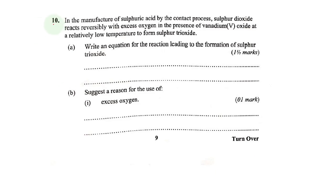Let us now have a look at question 10, the last question of section A. In the manufacture of sulfuric acid by the contact process, sulfur dioxide reacts reversibly with excess oxygen in the presence of vanadium 5 oxide at a relatively low temperature to form sulfur trioxide.